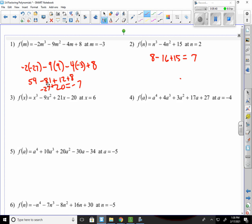Number 5. We're just doing negative 5 to the 4th. That's 625 plus 10 to the 3rd. So that would be 625 minus 1250, which would be negative 625. And then plus 20 times 25, which would be negative 125. And then plus 150, which would be 25 minus 34, which is negative 9.